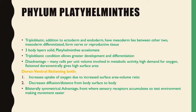The second phylum is Platyhelminthes, which are triploblastic. In addition to an ectoderm and an endoderm, they have a mesoderm which lies between the other two, and the mesoderm is differentiated to form nerve or reproductive tissue. These three body layers are solid, meaning Platyhelminthes are acoelomate. Their triploblastic condition allows for greater development and differentiation, but the disadvantage is that many cells per unit volume are involved in metabolic activity, creating a high demand for oxygen. This is why they are flattened dorso-ventrally, giving a high surface area — this both increases oxygen uptake and decreases diffusion distance from the body surface to the body.